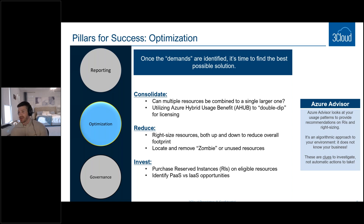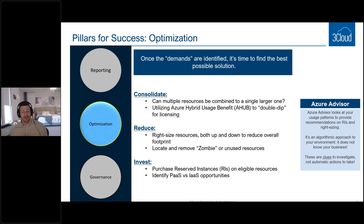There are three high-level categories for optimization in Azure. The first is consolidation: can you take a large grouping of VMs or resources and combine them into a single larger one? Can you take three one-SKU resources and make one two-SKU and achieve the same performance? There's also Azure Hybrid Usage Benefit, or AHUB, where you can double-dip on licensing. If you have an on-prem license and an Azure license, you don't need to double-pay. Consolidating both licensing and resources is huge.